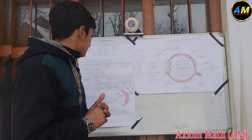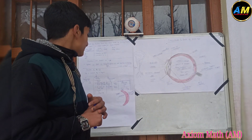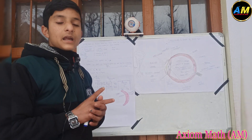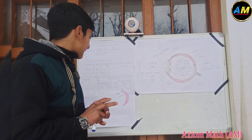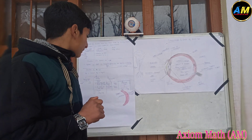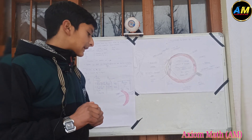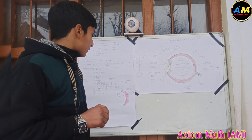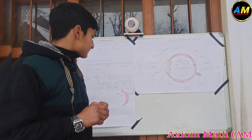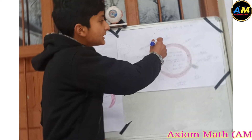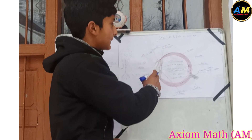The tunica nervosa is the nervous layer of the eye — this is the retina. The retina has three layers: the ganglion layer of multipolar neurons, the bipolar layer, and the photoreceptor layer. The photoreceptors are the rod and cone cells.